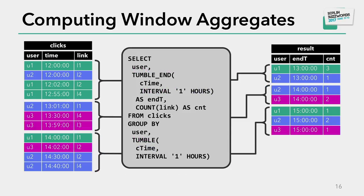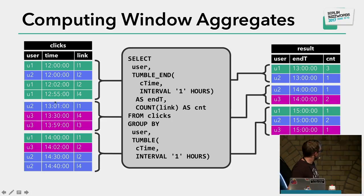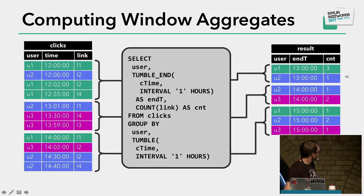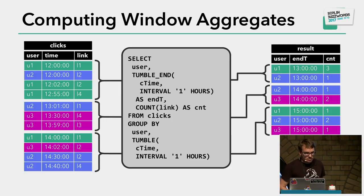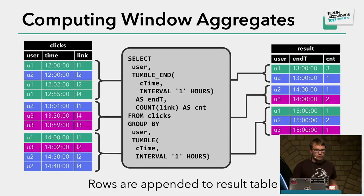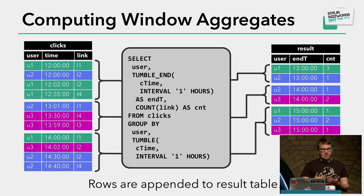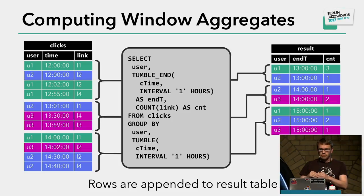Running such a query: clicks in the 12-to-1 range are aggregated into two records — user U1 visited three links (all green fields), user U2 visited one. In the next hour from 1 to 2, user U2 visited one link and user U3 visited two, and so on. An important distinction from the earlier query is that rows here are appended to the result table, not updated — once an entry is added, it is not changed. This differs from the non-windowed count query where emitted rows were later updated.